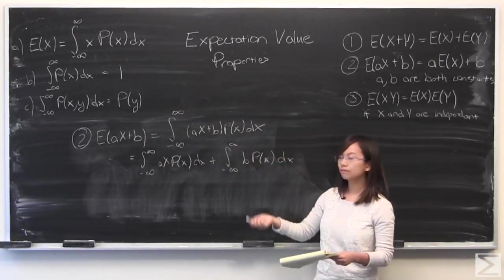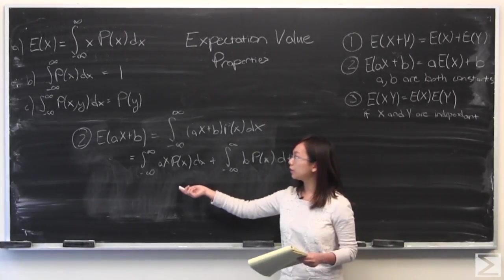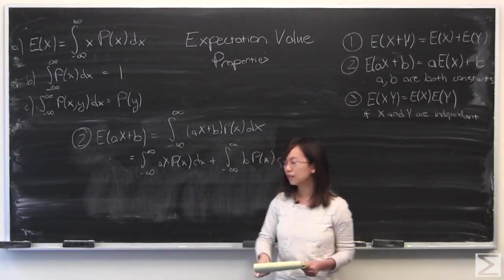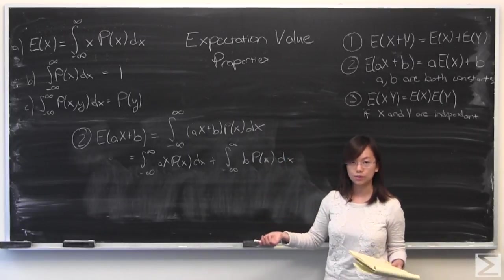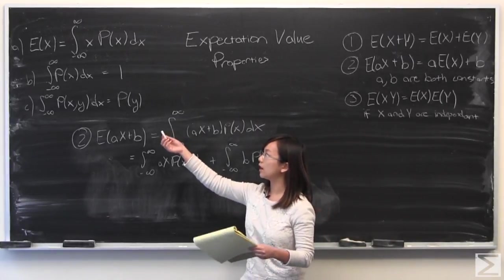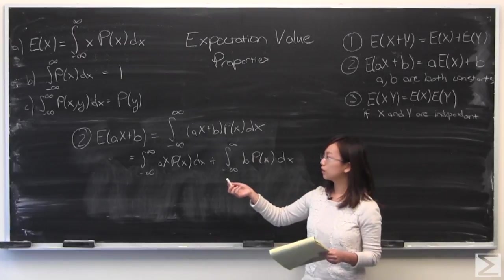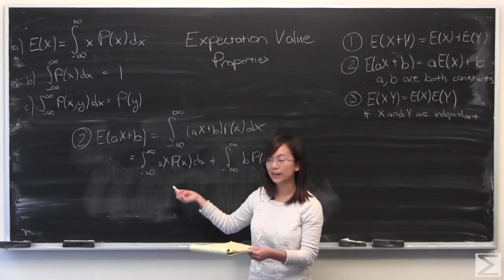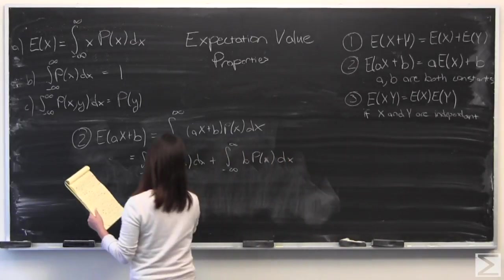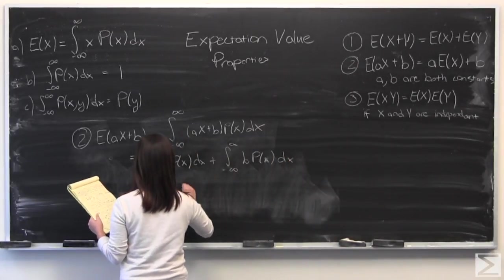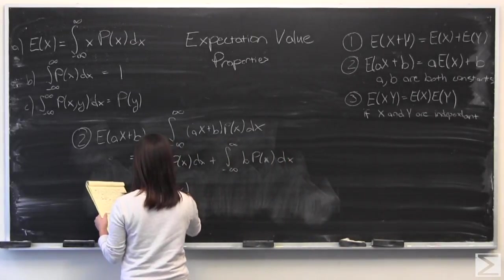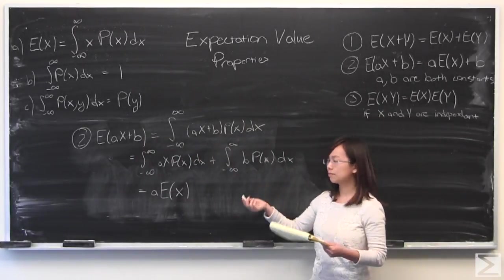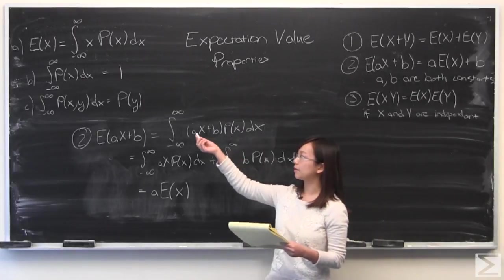I've distributed the integral. You can see if a is a constant, you can pull it out because of integration, and b is a constant, you can pull that out as well. I'm going to use properties A and B up there. For the first part, you can see that without a, this is just expectation value of X. Since we pulled out a, I'm going to put the constant over there. And for this one, we can pull out b.